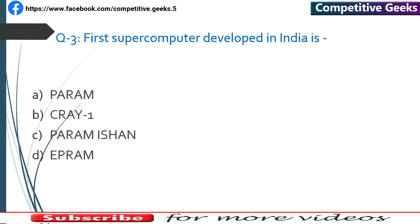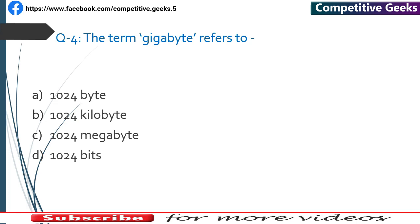Number 3: The first supercomputer developed in India is PARAM. It was developed by C-DAC — the Centre for Development of Advanced Computing — located in Pune, and it was developed in 1990.